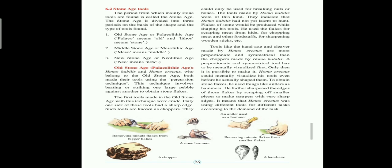Tools like the hand axe and cleaver made by Homo erectus were more proportionate and symmetrical. You can see in this picture tools like a hand axe, a chopper, a stone hammer, etc. — you can see pictures of these tools in your book. It shows that different tools were used for different tasks. Remains of old stone age tools have been found in India at various places, for example, Gangapur near Nasik and Chirki Nevasa near Nevasa are among the well-known old stone age sites in Maharashtra.